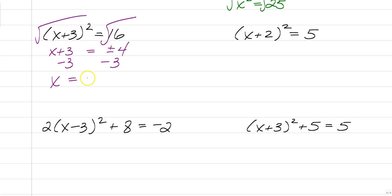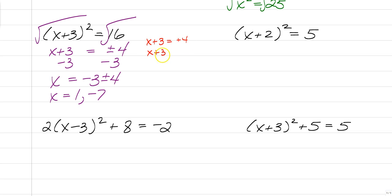Now we just need to subtract 3 from both sides to get x by itself. x is equal to negative 3 plus or minus 4. So we have x is equal to negative 3 plus 4, which is 1, and we also have negative 3 minus 4, which is negative 7. If that was confusing, once you get here you could split it: x plus 3 equals positive 4, and x plus 3 equals negative 4. But it's a good habit to keep it with the plus or minus for the more complicated ones.